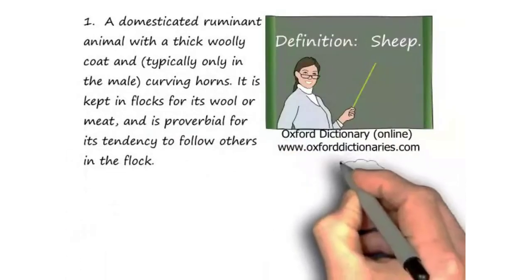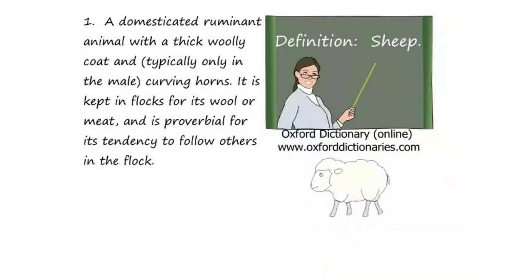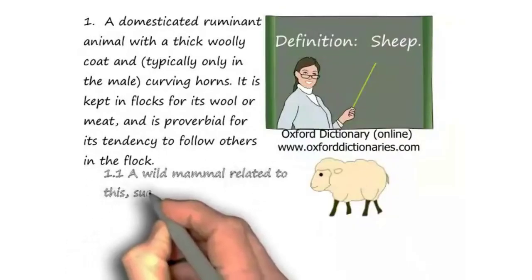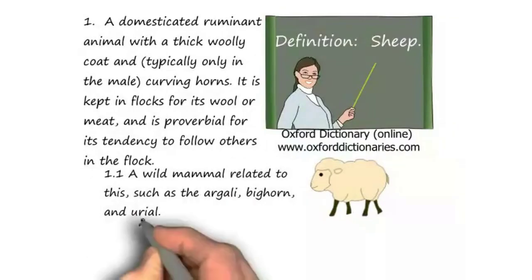Now wait a minute here, that's number one. Here's 1.1: a wild animal related to this, such as an argali, bighorn, and urial. Here's number two: a person who is too easily influenced or led.